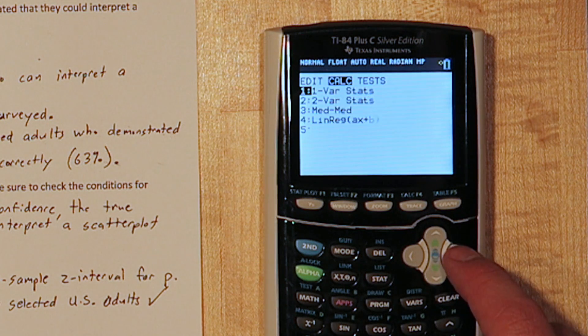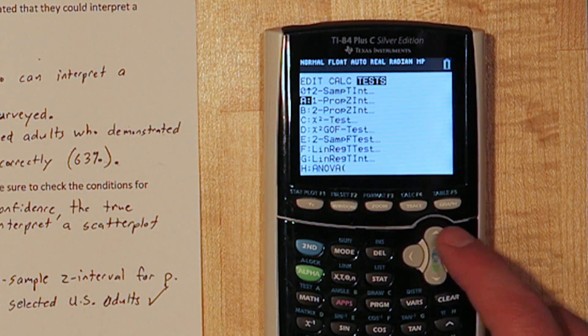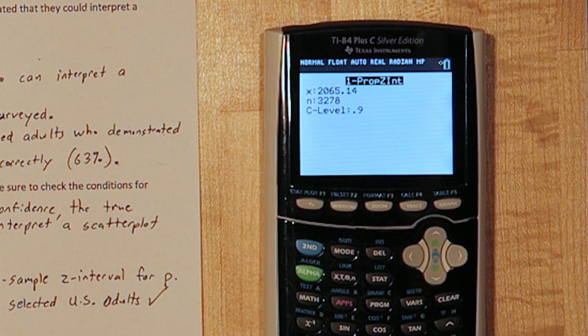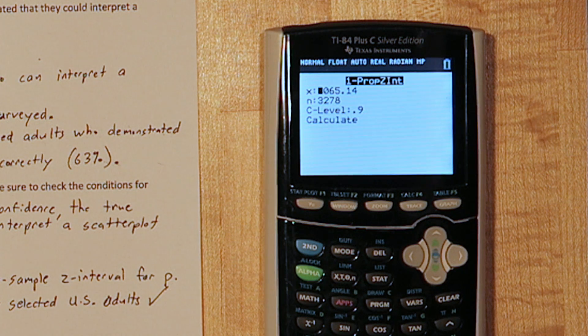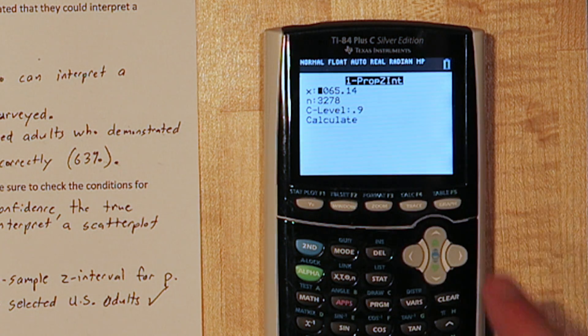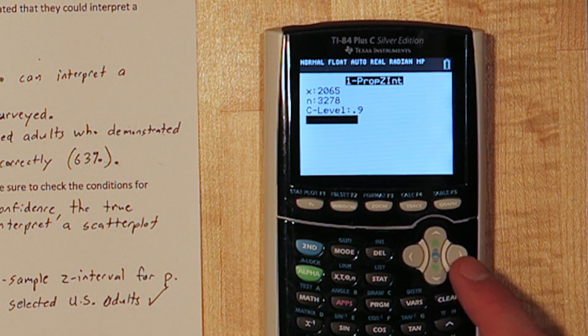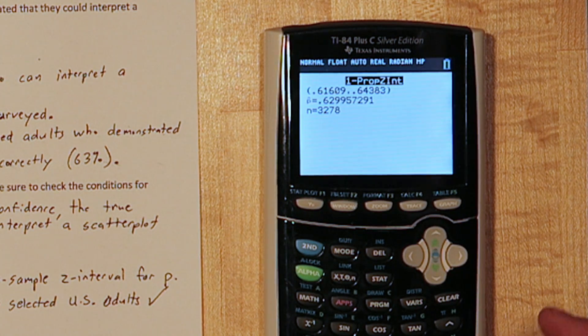Now we're getting a domain error. Let's go back and see what happened. For x, our value wasn't an integer. 63% times 3,278 ended up being 2,065.14. That's impossible. We can't have 2,065.14 people in our sample who could interpret a scatter plot correctly. So this is probably due to rounding when they reported the results of their survey. Let's change it to 2,065, which seems like the likely value.